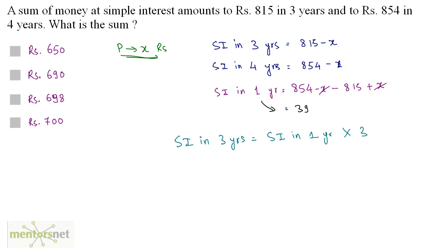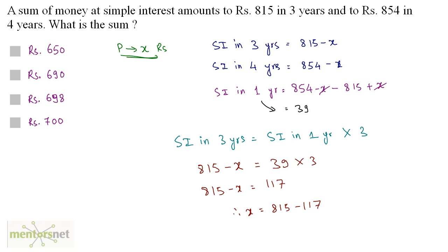The simple interest in 3 years equals the simple interest in 1 year times 3. So 815 minus x equals 39 times 3, which is 117. Therefore x equals 815 minus 117, and that equals 698. So the principal sum is Rs. 698, option C.